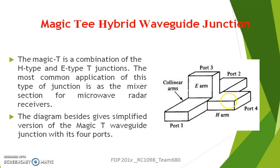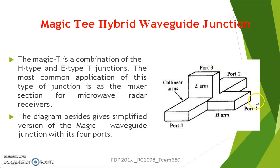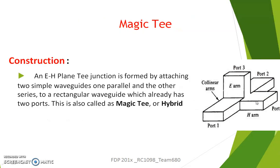Magic T — why is it called a Magic T? Because it is a combination of both E-plane T and H-plane T, and it has four ports: port 1 and port 2 isolated from each other, and port 3 and port 4 isolated from each other. It is formed by attaching two simple waveguides — one parallel and the other in series — to a rectangular waveguide. Another name for the Magic T is the hybrid T.